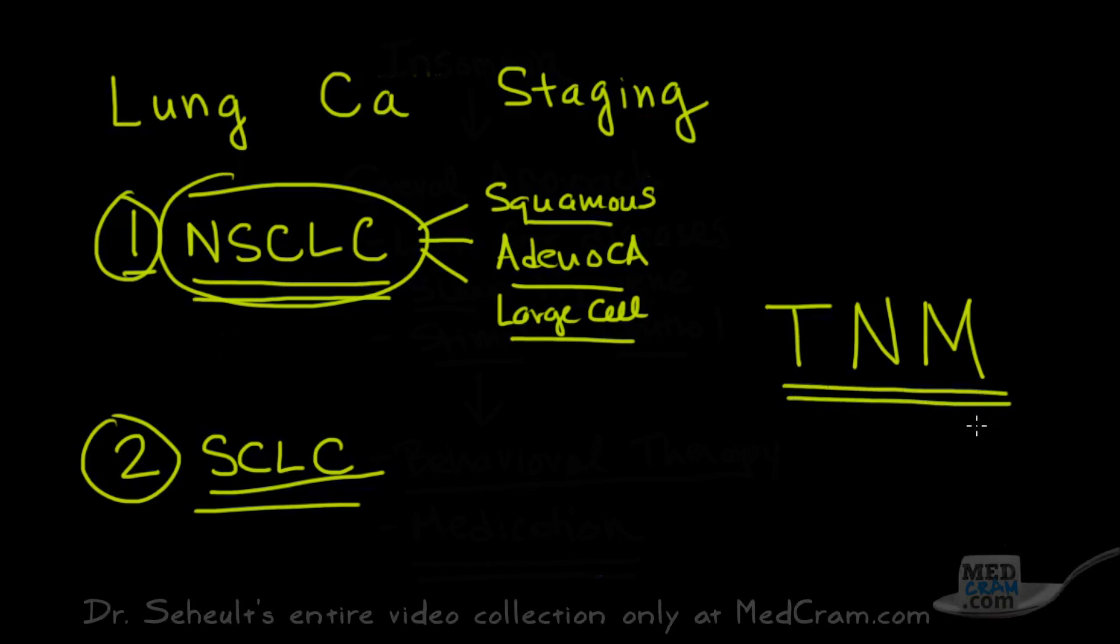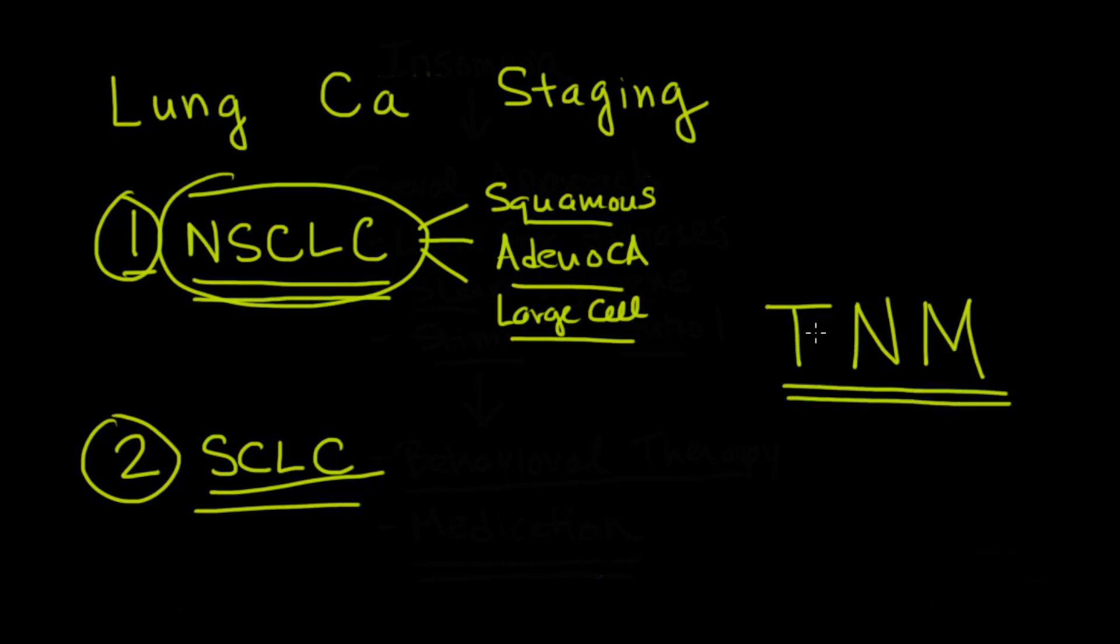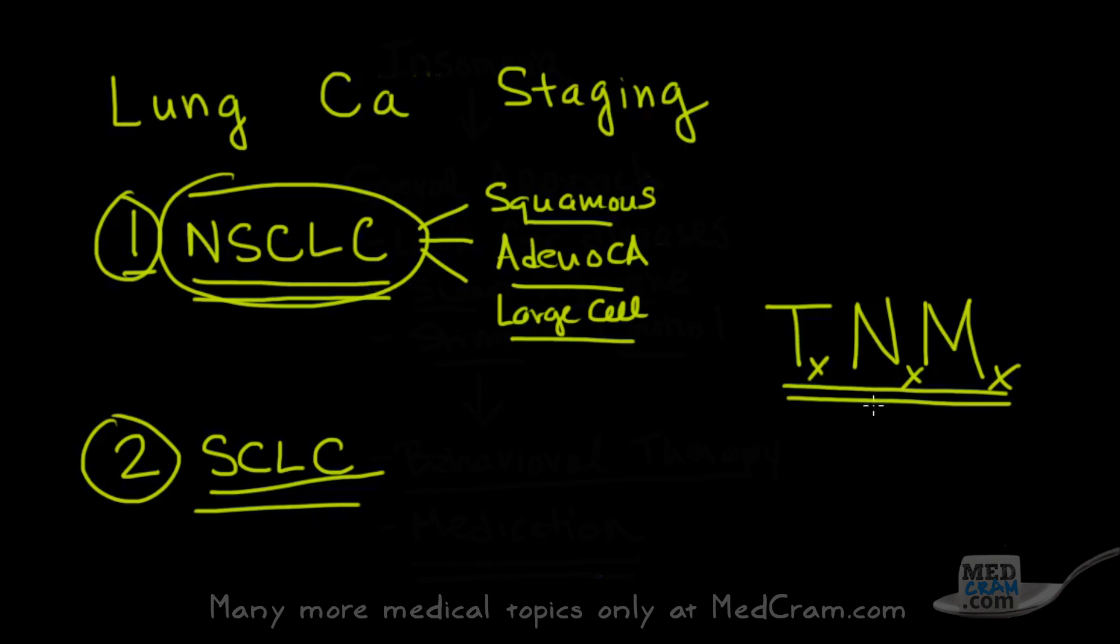The reason why this is important is because there are different treatments for each of the overall stages. So I don't want you to get confused. There is a T stage, there is an N stage, and there is an M stage. And then we put those all together and we come up with a total stage. And so the question is, how does that happen? Well, I want to explain that to you because it is a somewhat complex way of doing it. And you always wonder, how do they come up with the overall stage from a T and an M staging? So let's get into that.